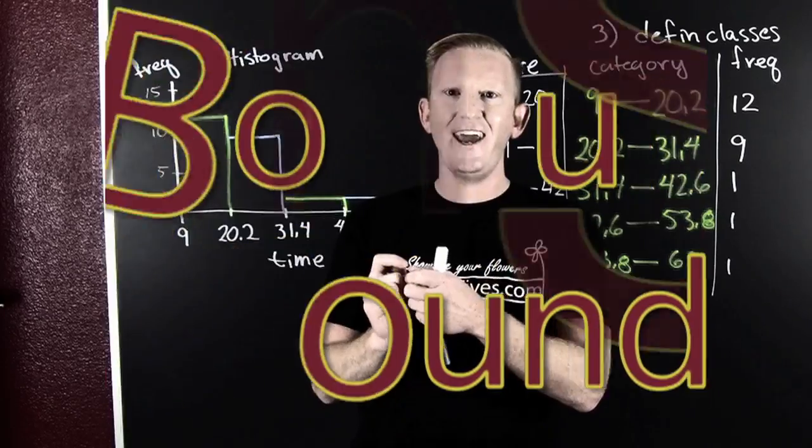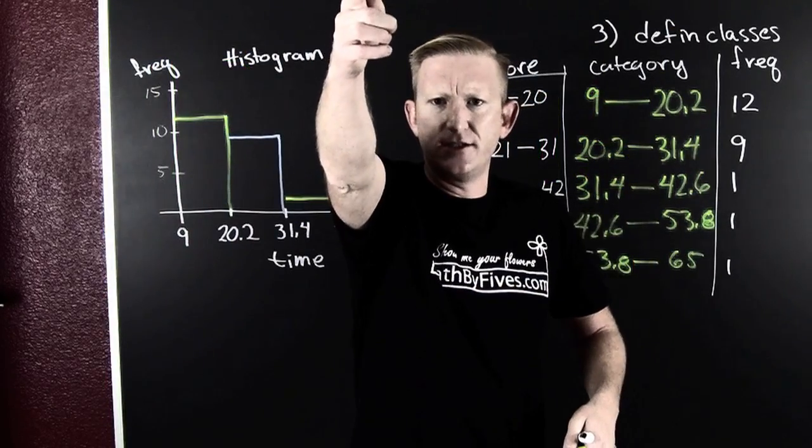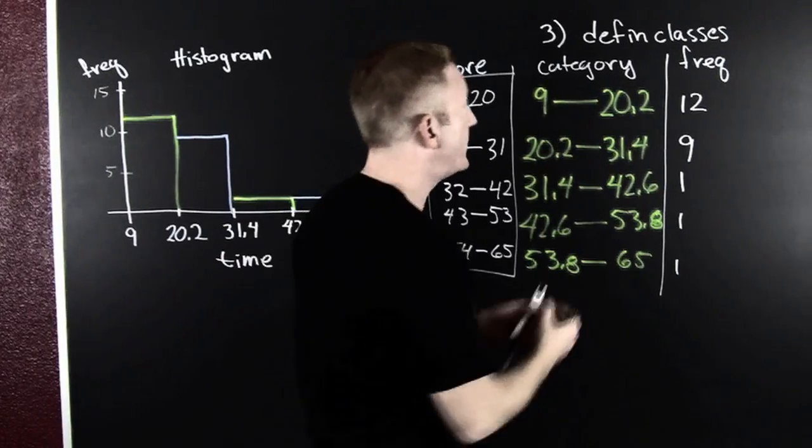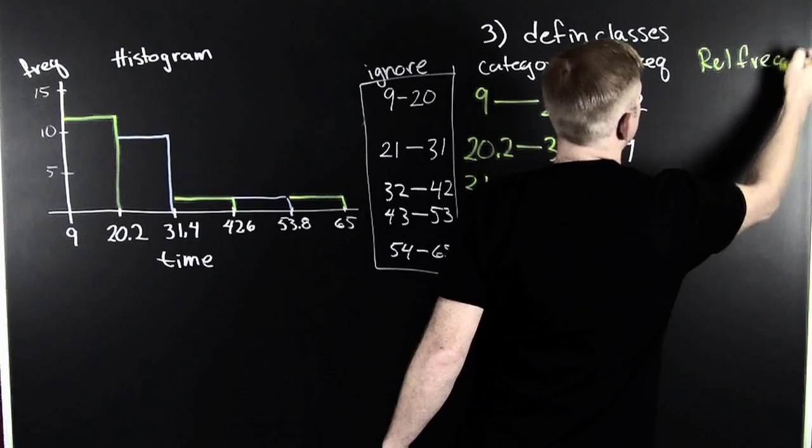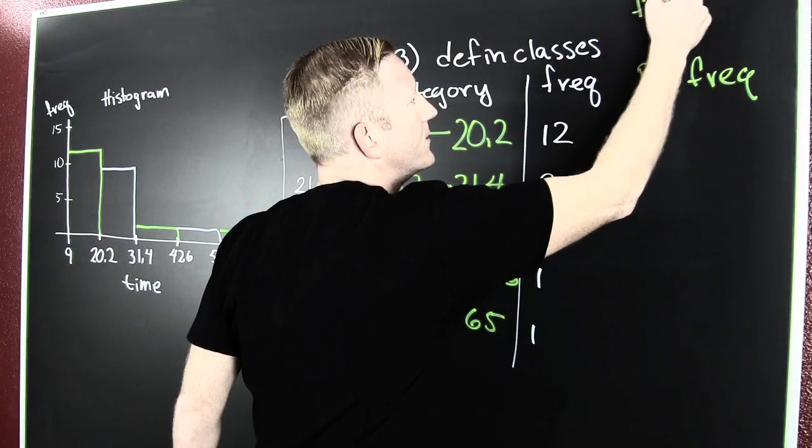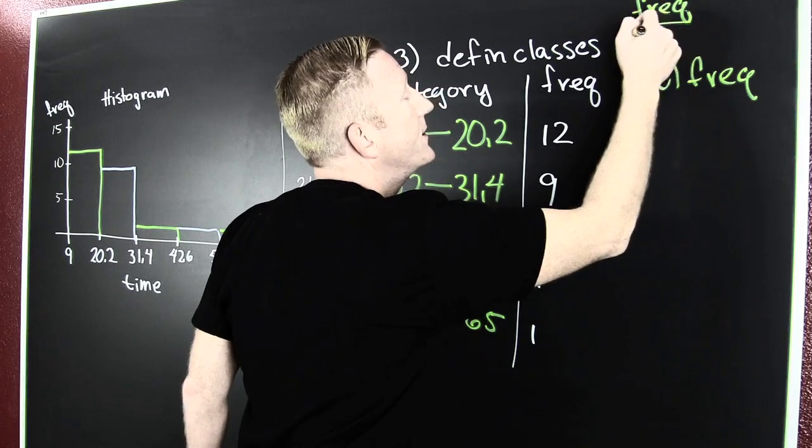Bonus round. We're gonna go beyond frequency histograms and go to relative frequency histograms. How are we gonna do that? We're gonna find the relative frequency. That's the frequency divided by the total number.